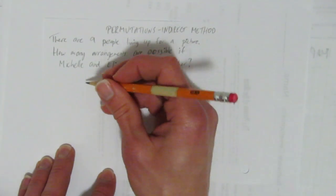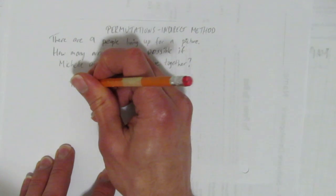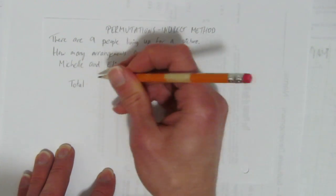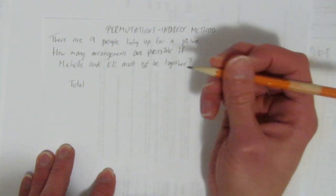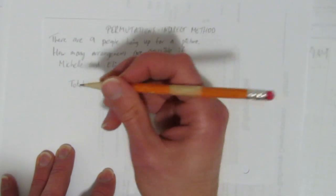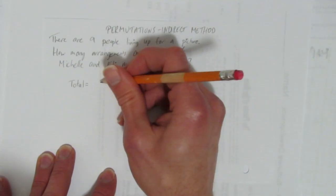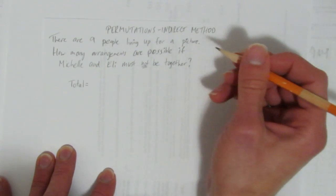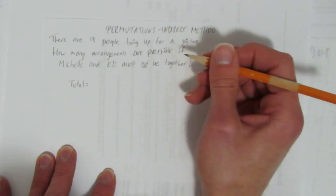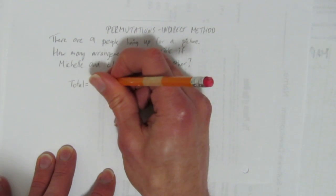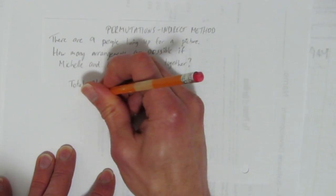We're going to look at the total possibilities minus the ways that they are together. We'll write that out in steps. First, I'm going to calculate the total possibilities. Let's say there were no restrictions. If you could just order everyone and not worry about Michelle and Eli, there are nine people lining up.